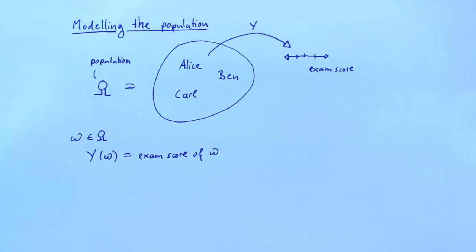For example, if Alice has achieved 86 points on the exam, then Y of Alice is 86. Note that Y is very similar to a random variable. In fact, the only thing that distinguishes Y from a random variable is that we have a different interpretation of the space on which it is defined, capital Omega.